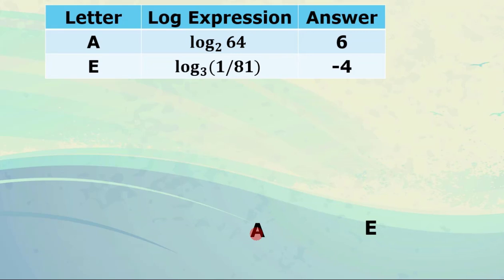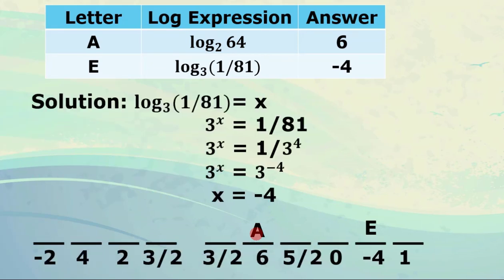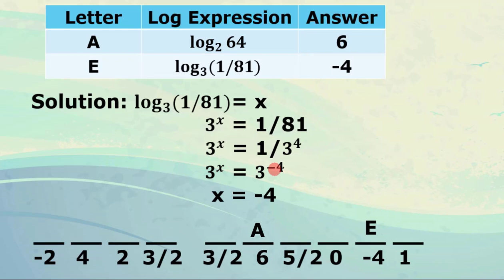For the next letter, log of 1 over 81 to the base 3 equals negative 4. We let x equal log of 1 over 81 to the base 3, then 3 raised to x equals 1 over 81. Expressing 81 as a power of 3: 81 equals 3 to the 4th, so 1 over 81 equals 3 raised to negative 4. Therefore 3 raised to x equals 3 raised to negative 4, giving x equals negative 4. We locate negative 4 and write the corresponding letter.